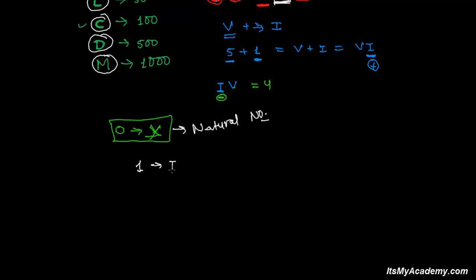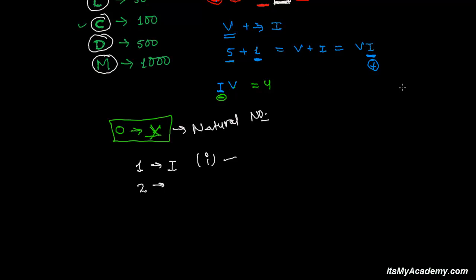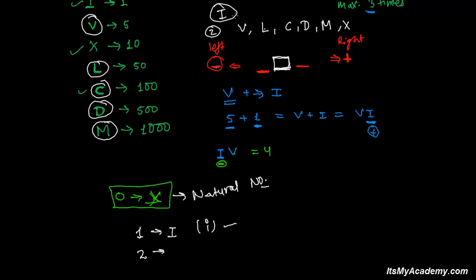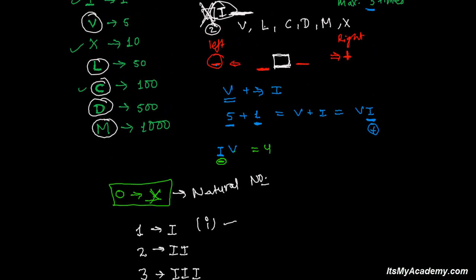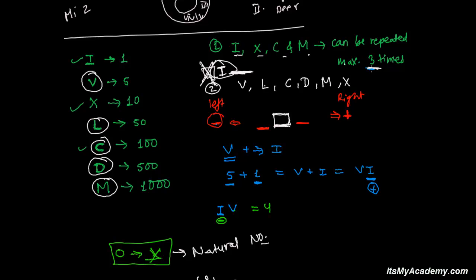Now the first one — that's pretty simple, just I. For two, if you write I on the right side it means you are adding, so II is two. For three, you write I three times — I, I, I. Now for four, you might think to write I four times, but the rule says I can be written maximum three times together. So we cannot write four I's — that would be wrong.